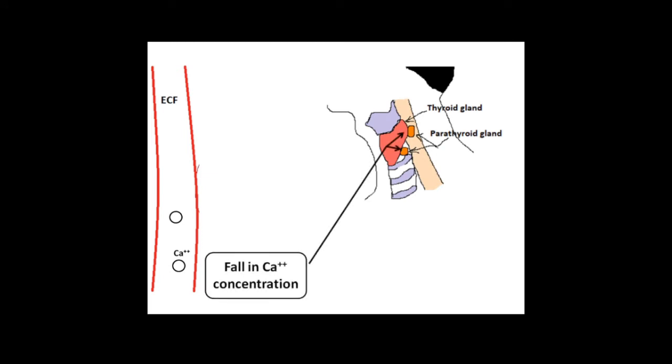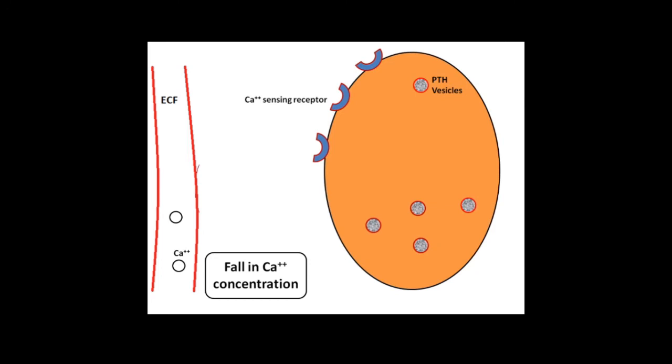Parathyroid glands are located just behind the thyroid glands. These glands have special receptors called calcium sensing receptors. When these receptors sense a fall in calcium concentration, they cause inactivation of phospholipase C and the inositol triphosphate and diacylglycerol system.